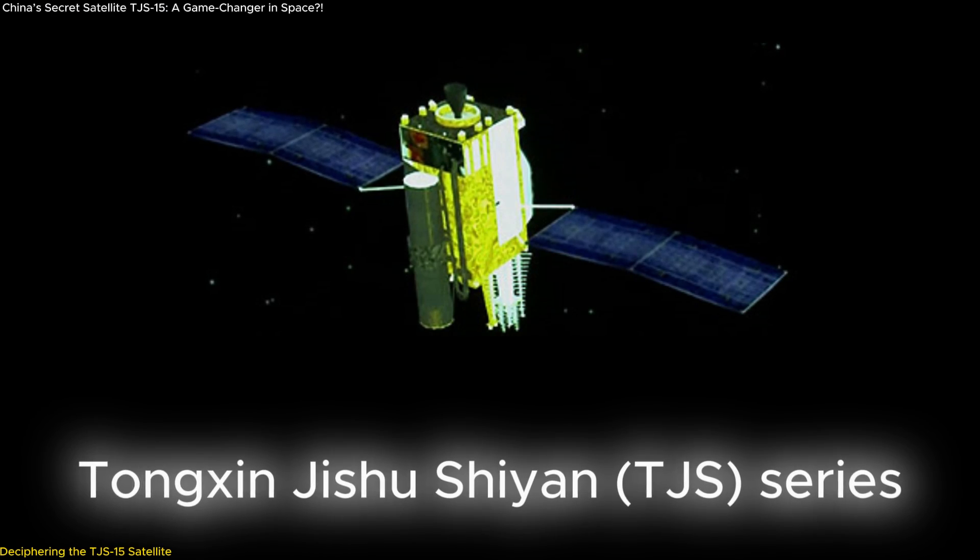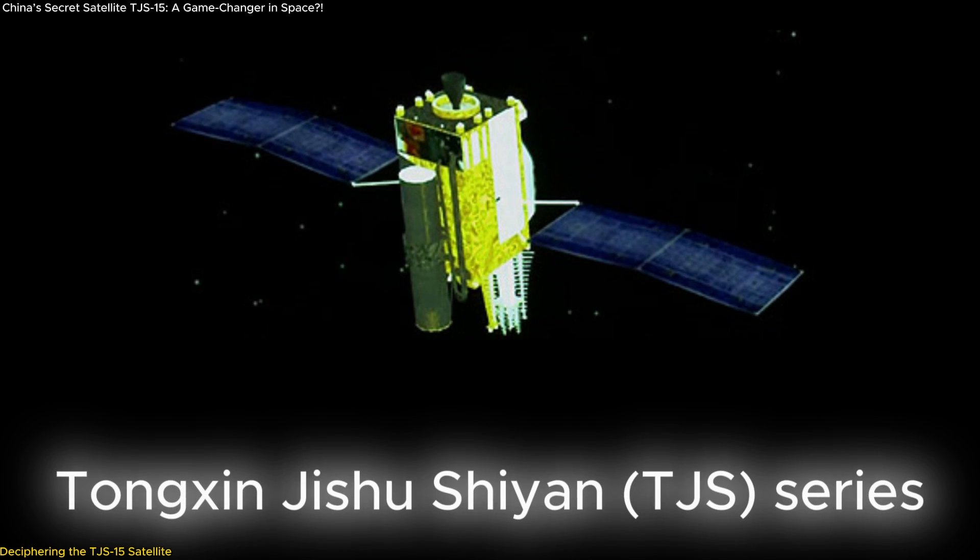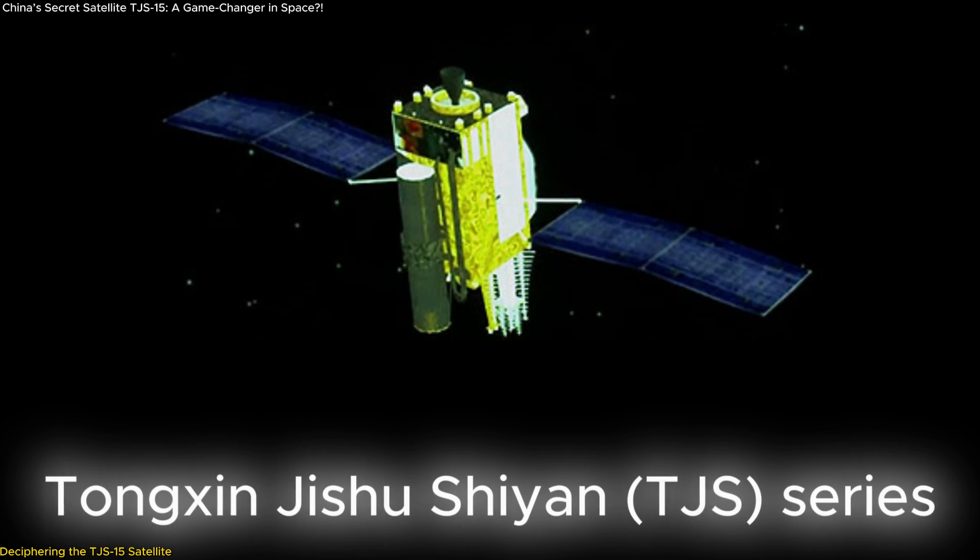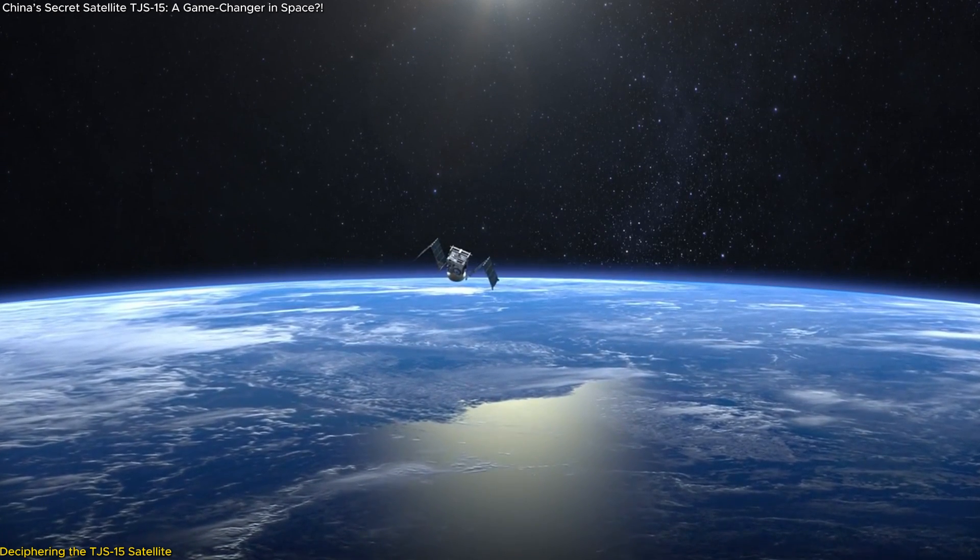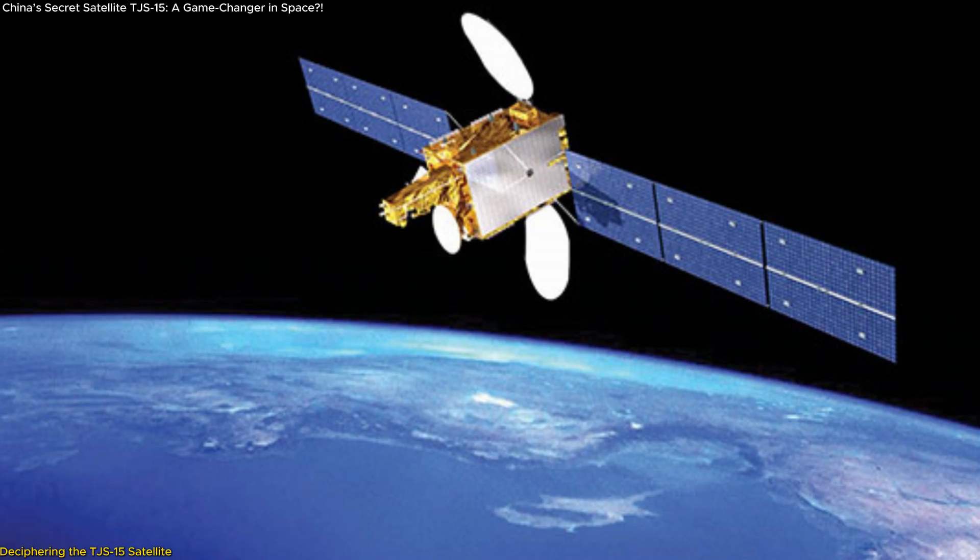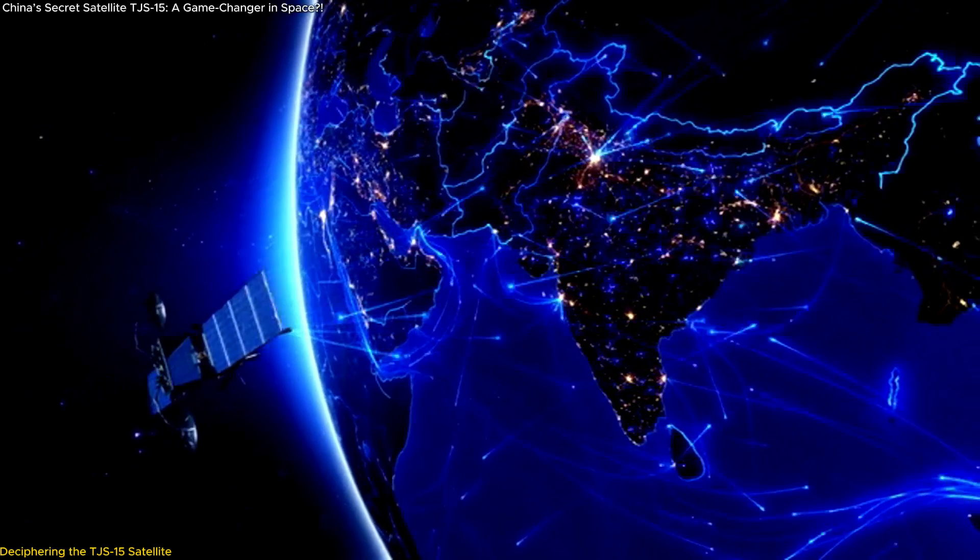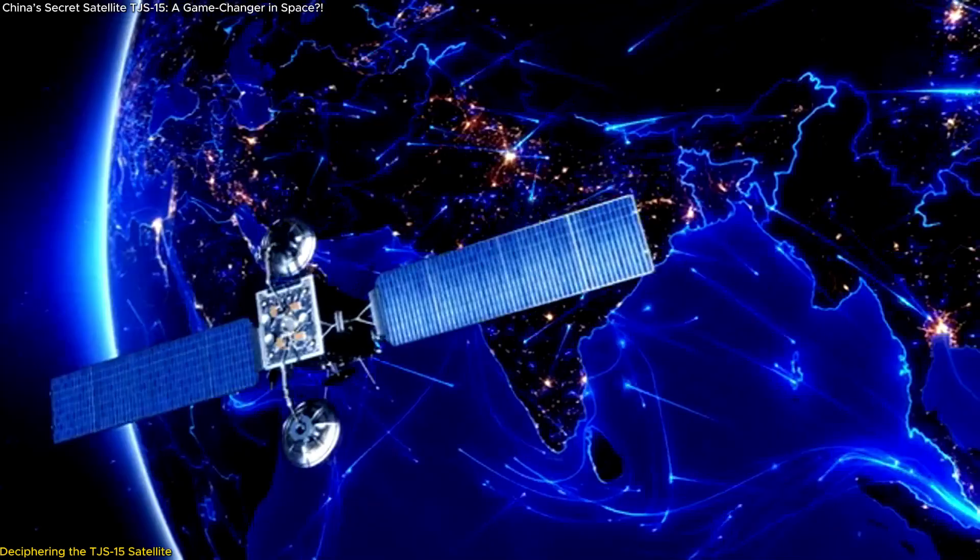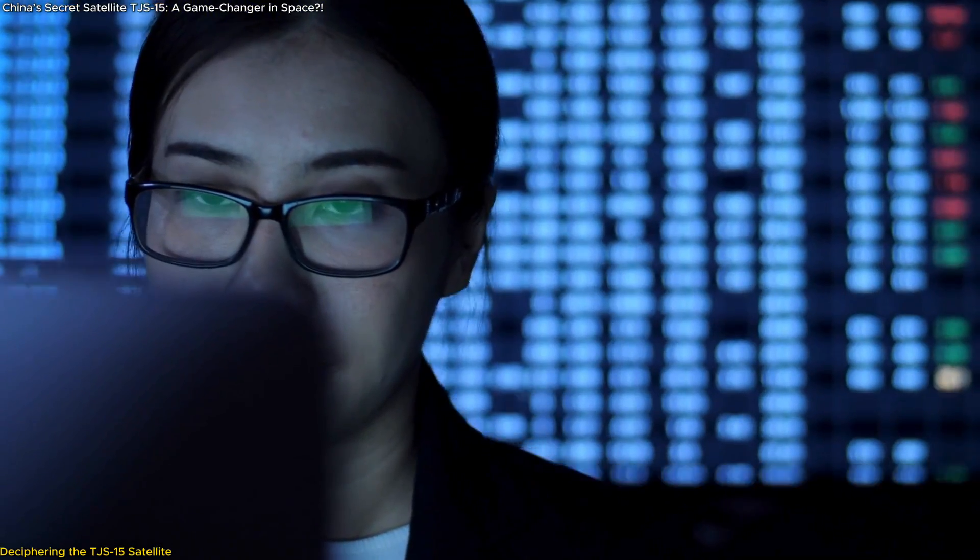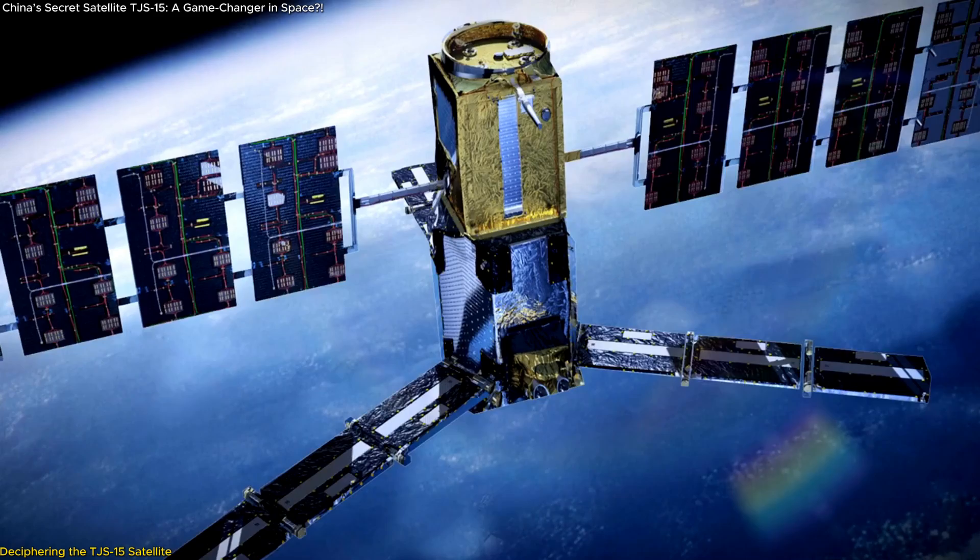The Tengxin Jishu Shuryan, TJS, series, translating to communication technology experiment, has been a focal point of intrigue since its inception in 2015. The TJS-15 is the latest addition to this series, officially intended for testing communication technologies. However, the consistent lack of detailed information from Chinese authorities has led analysts to question the satellite's actual mission.